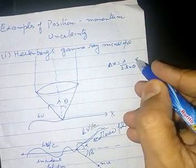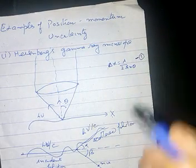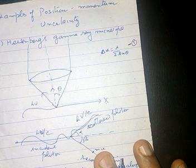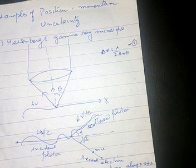Let us suppose we give this equation as equation number 1, where delta x represents the distance between two points which can be resolved by the microscope. Hence it represents the uncertainty in determining the position of the particle.